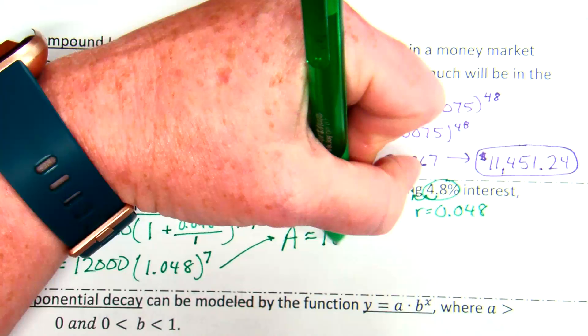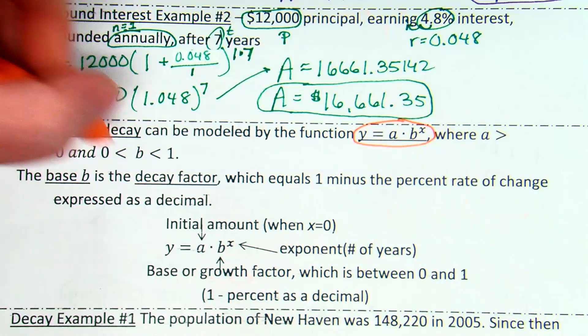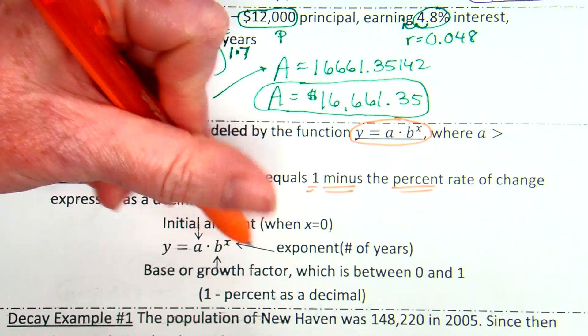Okay, so that was compound interest, another form of growth. What have we not talked about yet today? Decay. So we're going to talk about decay now. The difference is we're talking about a decay factor, and it is 1 minus the percent rate of change expressed as a decimal. Okay. We've got our initial amount still, our exponent with the number of years, and our base or growth factor. So, basically, the difference is for decay, we subtract instead of add.